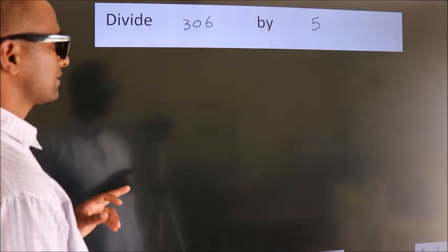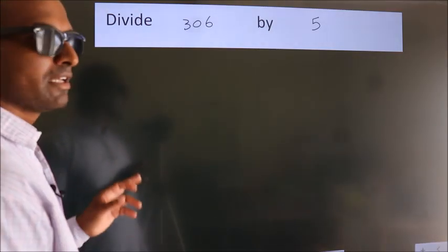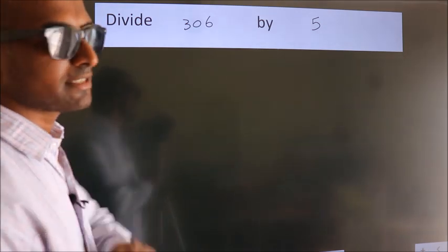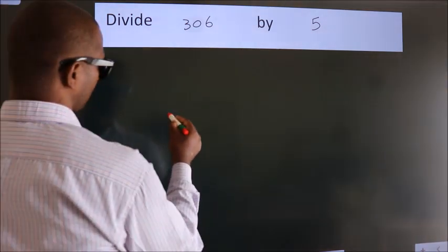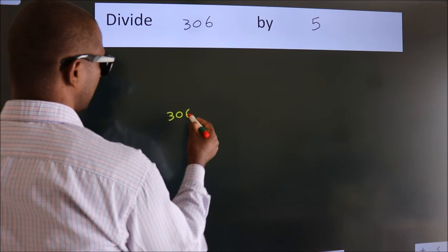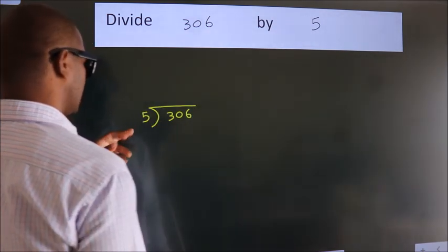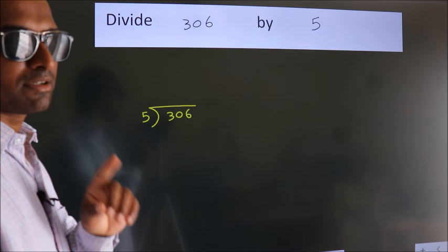Divide 306 by 5. To do this division, we should frame it in this way. 306 here, 5 here. This is your step 1.